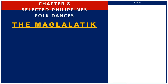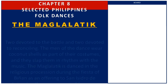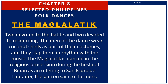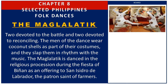Next is the Maglalatik. The Maglalatik is a mock war dance that depicts a fight over coconut meat, a highly prized food. The dance is broken into four parts — two devoted to the battle and two devoted to reconciling. The men of the dance wear coconut shells as part of their costumes and they slap them in rhythm with the music. The Maglalatik is danced in the religious procession during the Fiesta of Biñan as an offering to San Isidro de Labrador, the patron saint of farmers. Here are some example pictures.